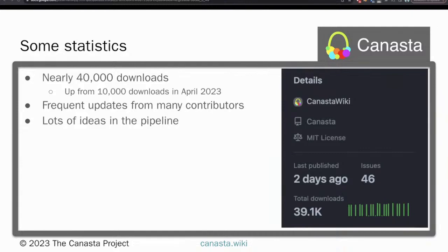A quick update on statistics: it's been nearly one and a half years since Canasta was first released to the public in April 2022 at EMWCon 2022. Since then, the Canasta web image has been downloaded nearly 40,000 times, and the project code repos receive frequent updates from various contributors both within and outside of the MediaWiki enterprise communities.